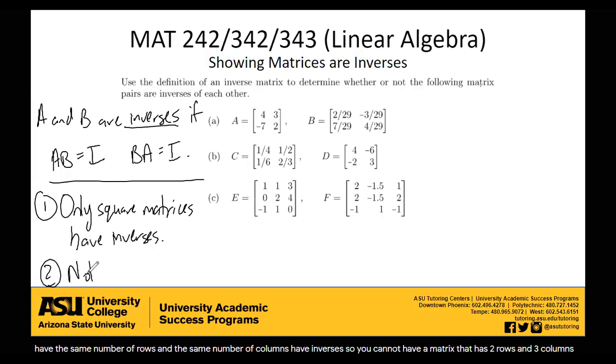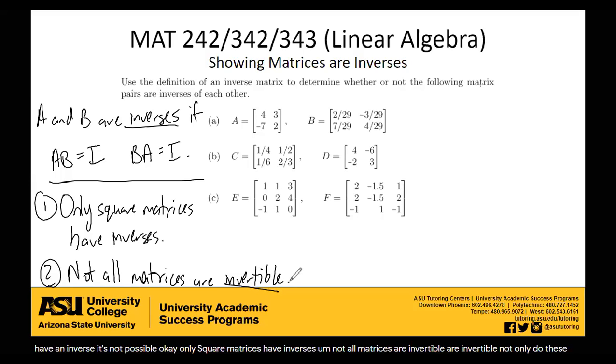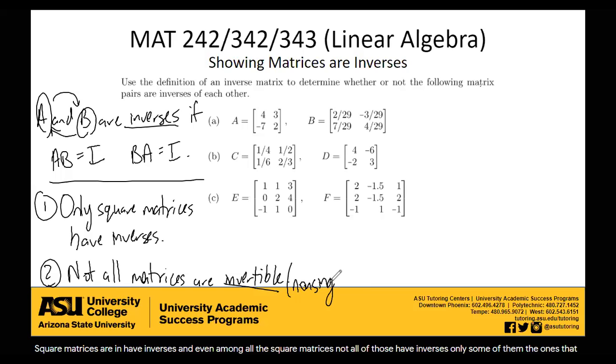Second thing, not all matrices are invertible. Invertible means that a matrix has an inverse. In this case, the inverse of A is B and the inverse of B is A. They're inverses of each other. We would say that both A and B are invertible matrices because there exists an inverse. So only square matrices have inverses, and even among all the square matrices, not all of those have inverses, only some of them. The ones that do have inverses, we call them invertible. We also call them non-singular. Invertible means non-singular, non-singular means invertible.